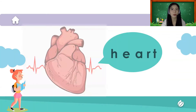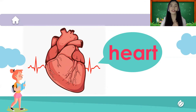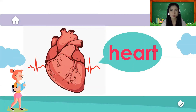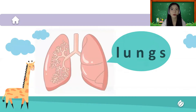Next we have our heart. We only have one heart. Let's spell the word heart: H-E-A-R-T. It's inside our left chest. It is the organ that pumps blood into our body — it is the body's blood pumper.